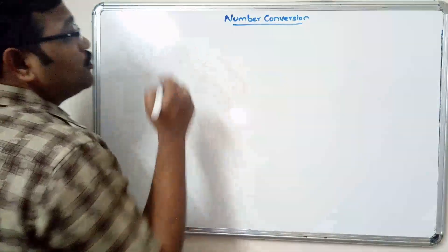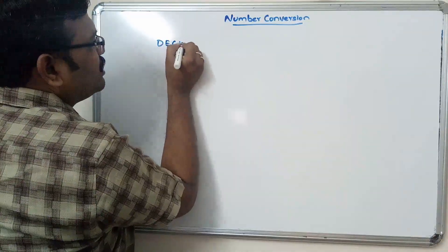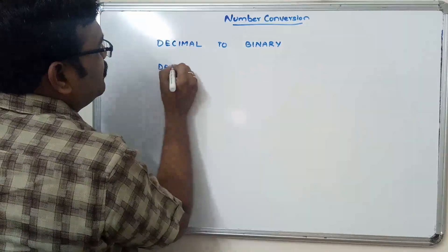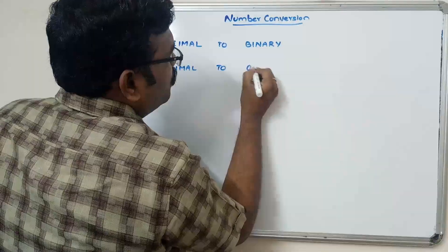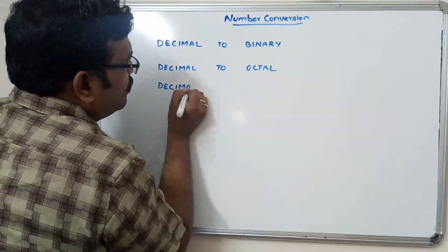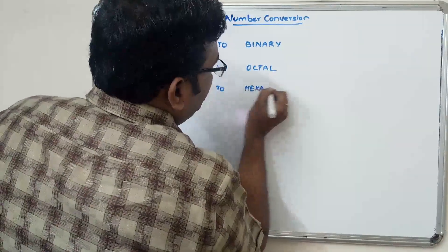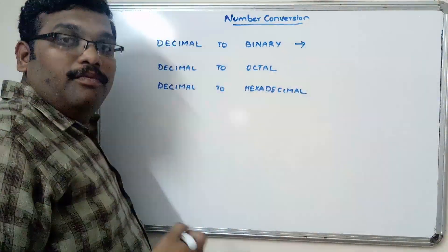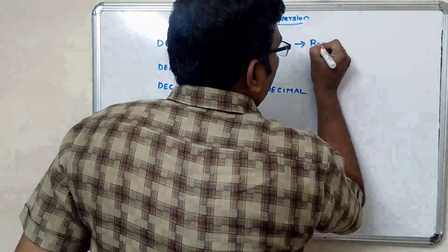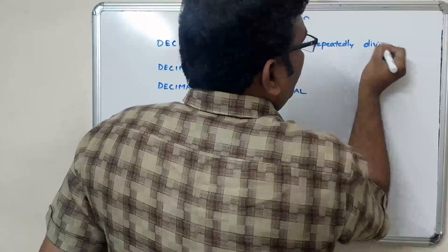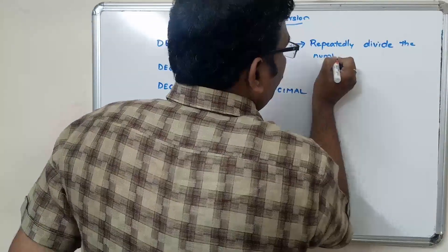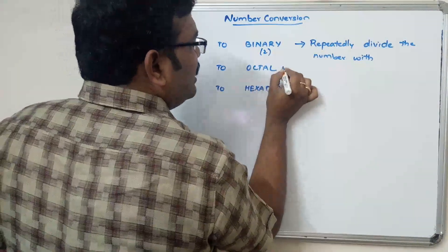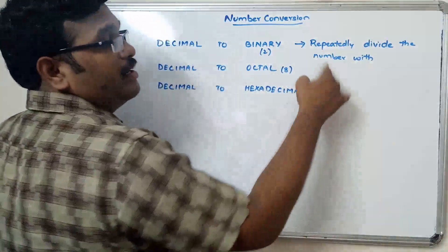We will go with number conversion, covering decimal to binary, decimal to octal, and decimal to hexadecimal. For binary we have to repeatedly divide the number by the base. Binary has base 2, octal has base 8, and hexadecimal has base 16.